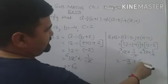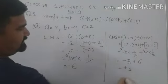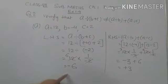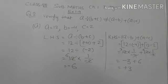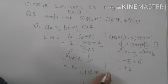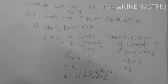And it gives plus 6. Now minus 3 plus 6 gives plus 3. So LHS side is minus 6 and RHS side is plus 3. So LHS is not equal to RHS. You can write LHS not equal to RHS — it is verified. So this is the solution of part A.